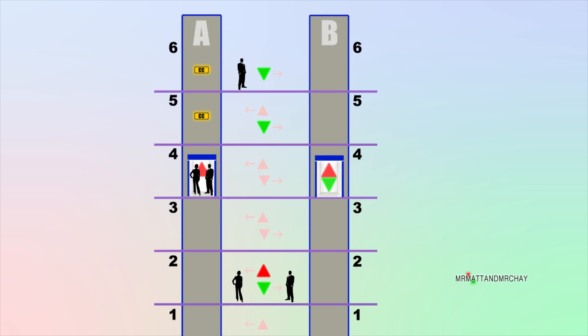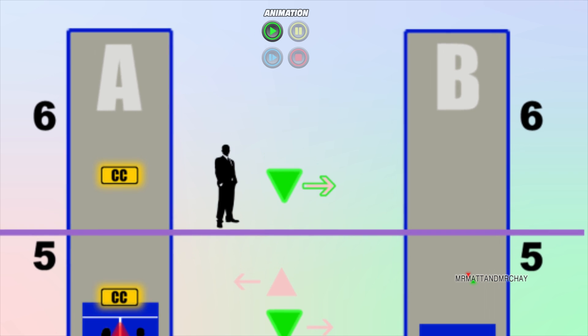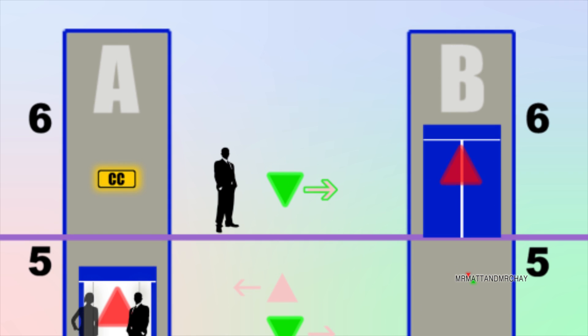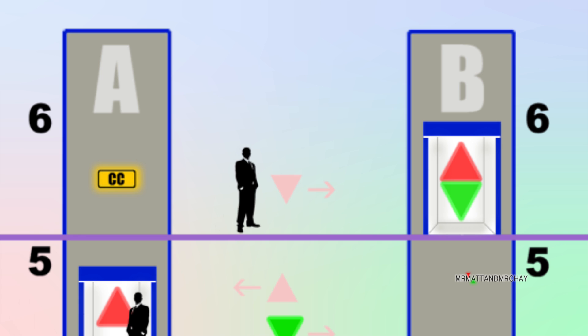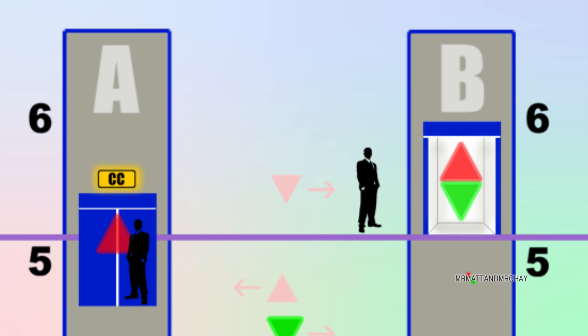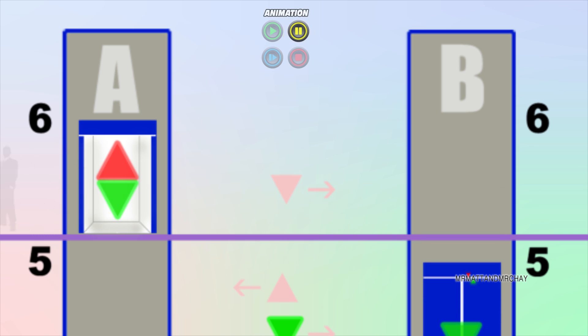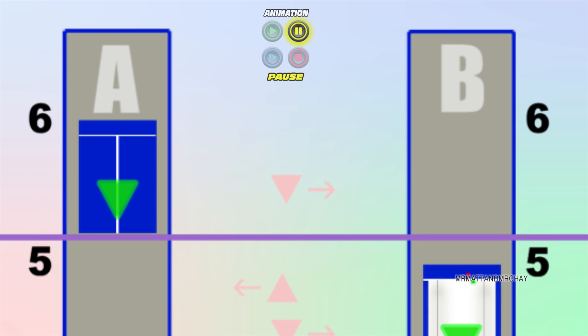As down calls are connected to the right hand lift, lift B goes to collect it, followed directly after by lift A. This is very difficult to prevent without developing a better logic system which inevitably would involve far more relays and a far more complex design.